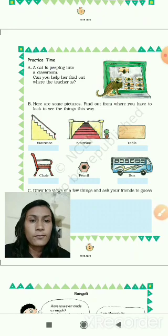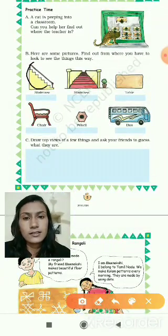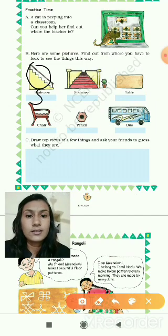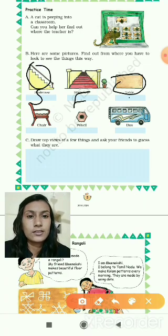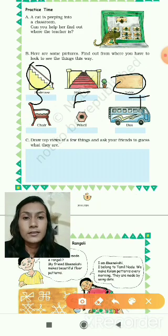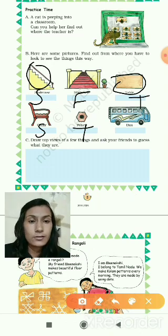Find out from where you have to look to see the things this way. Here a staircase is given — this is the side view of the staircase. Again a staircase is given, but this is the front view of the staircase. Then a table is given — this is the top view of the table. Then a chair is given — this is the side view of the chair. Then a pencil is given — this is the top view of the pencil. And a purse is also given — this is the side view of the purse.